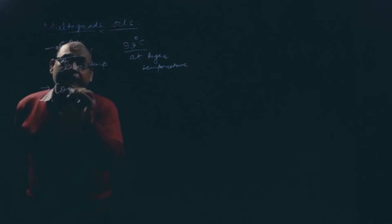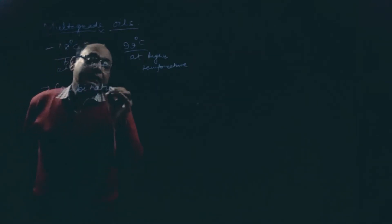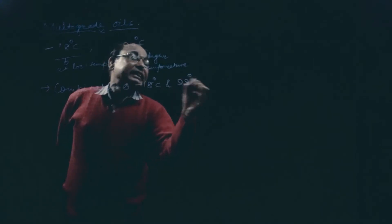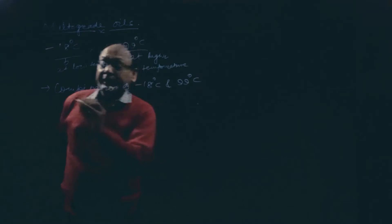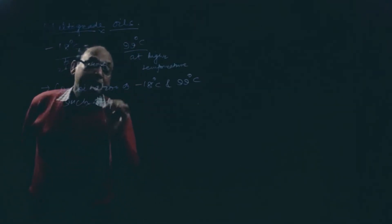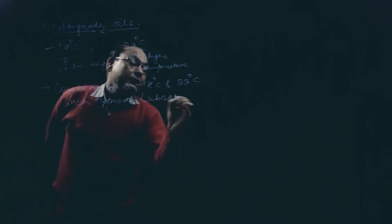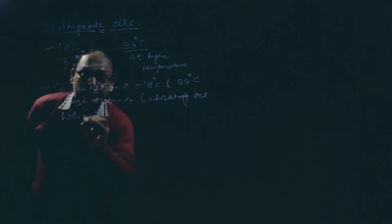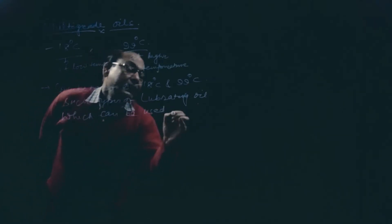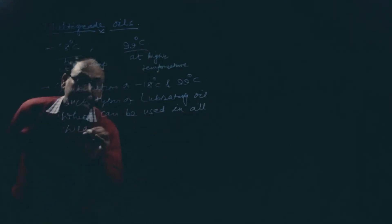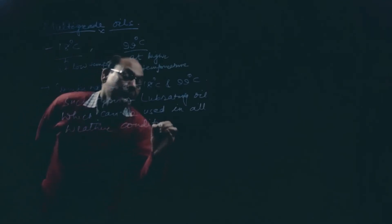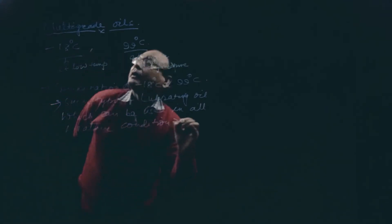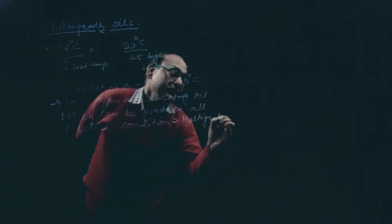So it is better to have a combination of minus 18 degree centigrade and 99 degree centigrade. That means, if we can use such types of lubricating oil which can be used in all weather conditions, those are called multigrade oils.